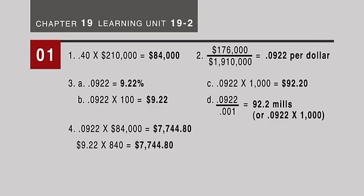In thousands, you then would move the decimal three places over, or 92.20 times 84. Again, the 84, we were dropping three zeros from the 84,000, gives us that property tax of $7,744.80.